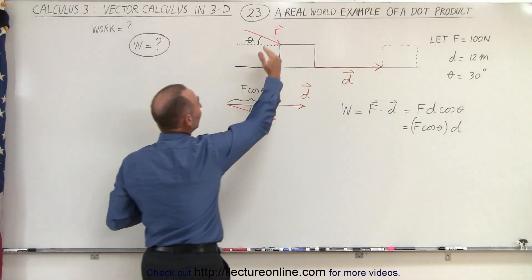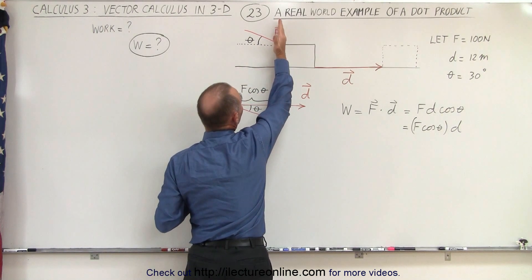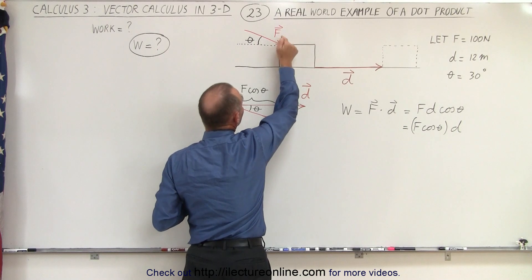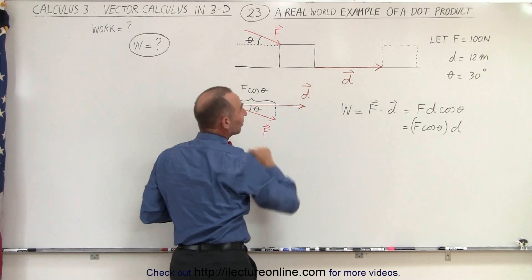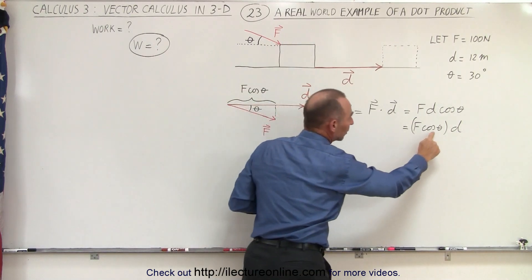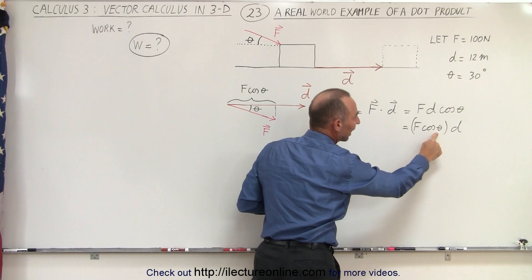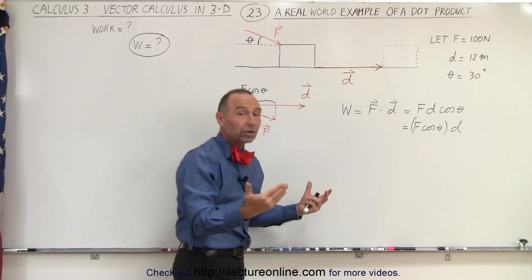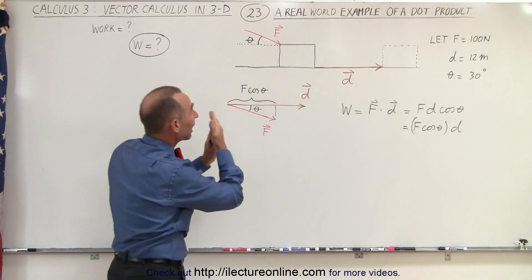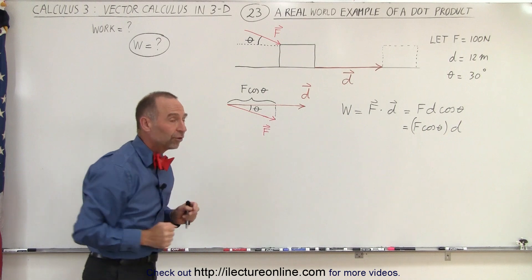Now, if the force acts straight down, then the angle becomes 90 degrees. If the angle becomes 90 degrees, the cosine of 90 is zero, so there's no work done because there cannot be any displacement by the force.